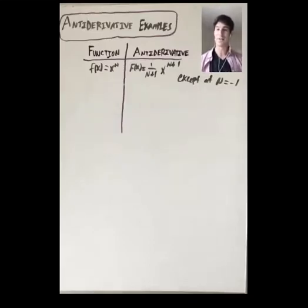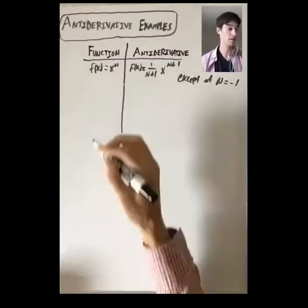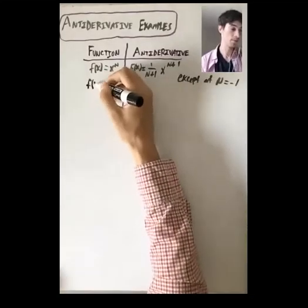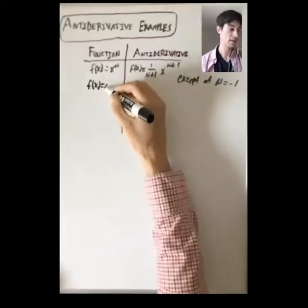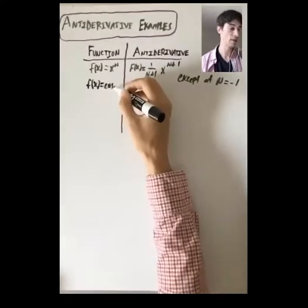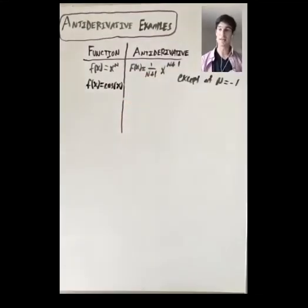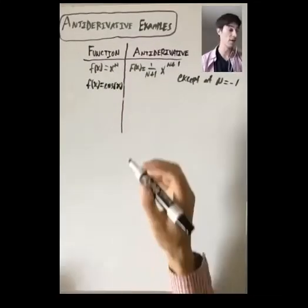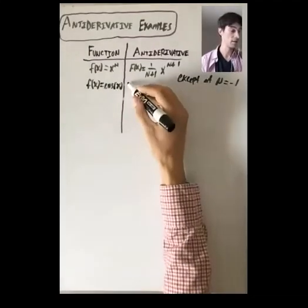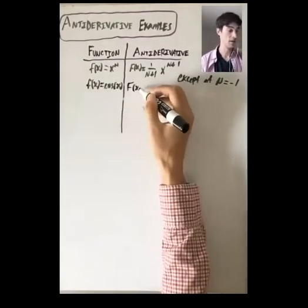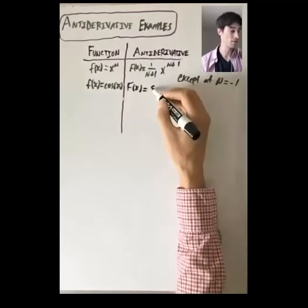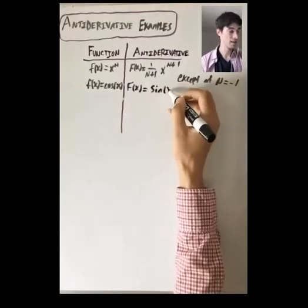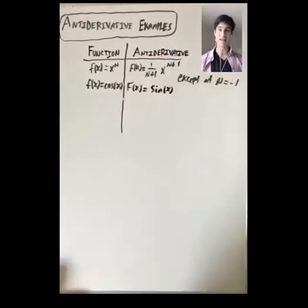One of the first things you learn in Math 2a is about derivatives of trig functions. For example, if f(x) is cosine of x, what's an antiderivative? That's a function whose derivative is cosine of x. If you think about the trig derivatives you know, one example is sine of x — the derivative of sine is cosine.